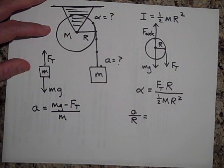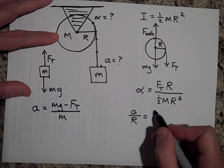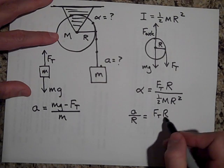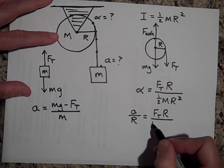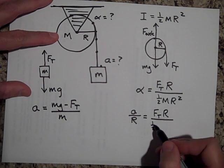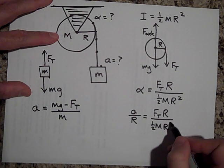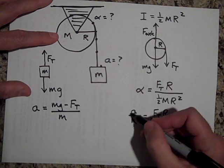It's the same a that's equal to FT times R all over one half MR squared. So I just changed the alpha to a over R.